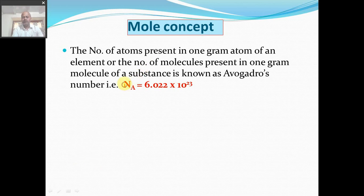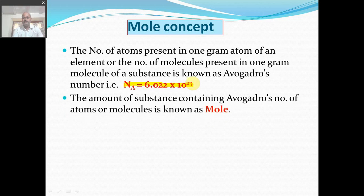This number is known as Avogadro's number. Avogadro's number is denoted by Nₐ and it is the number of particles — meaning atoms present in 1 gram atom of an element, or number of molecules present in 1 gram molecule of a substance. The amount of substance which contains Avogadro number of atoms or molecules is known as mole.